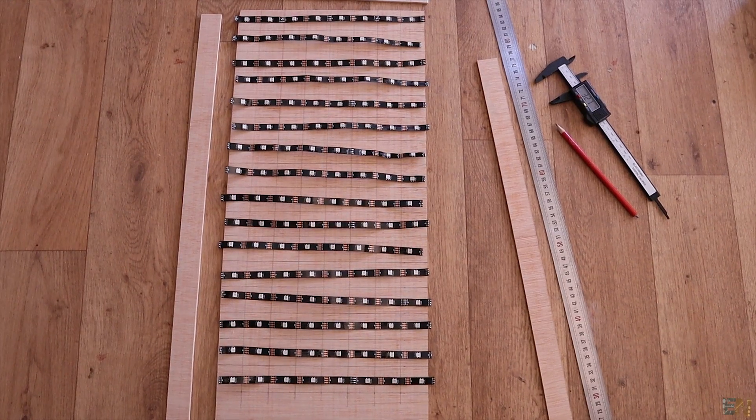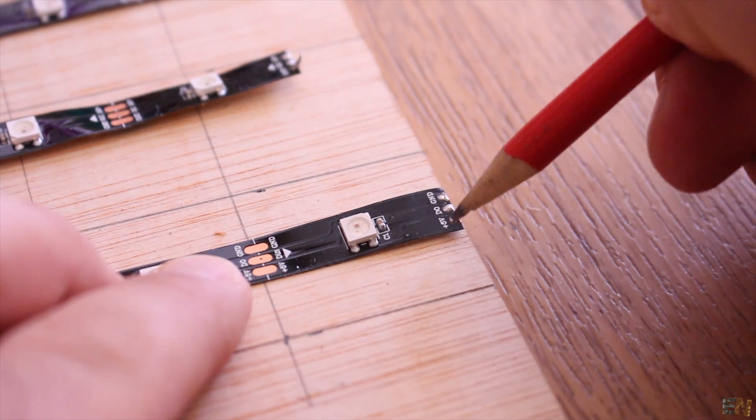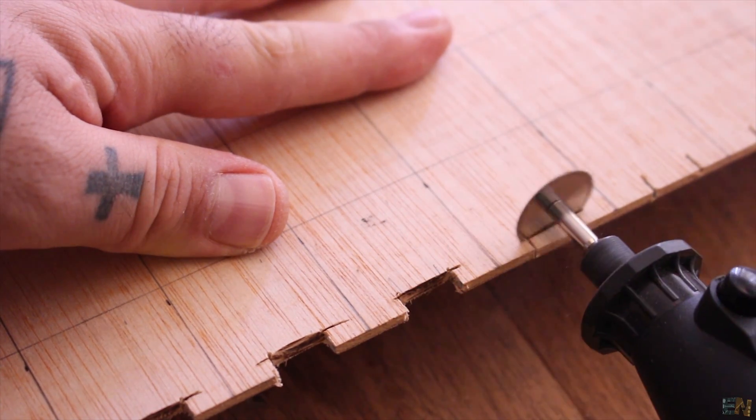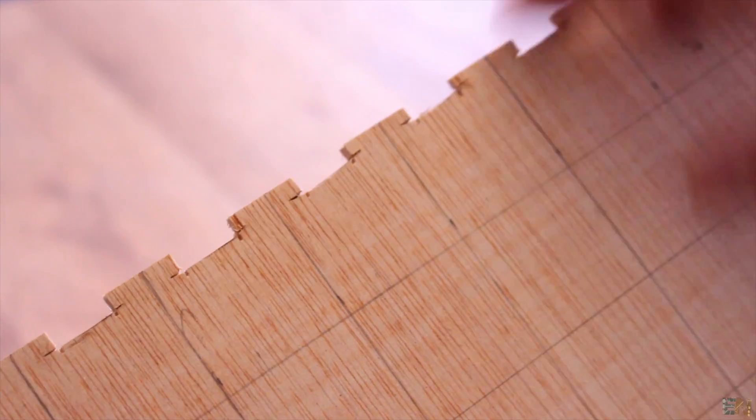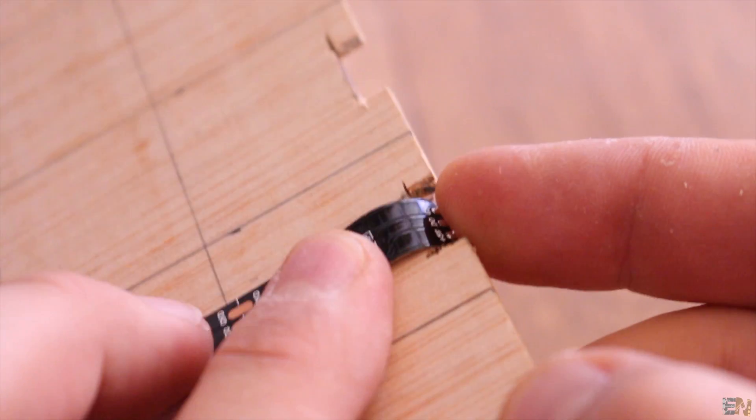But before we glue them in place, we have to cut a small part of the board so we could pass the wires on the other side. I mark the position of the strip more or less and then I cut a small part from the plywood. Now you should have 16 holes on each side like this, so now when I place the LED strip, it will be able to pass on the other side.